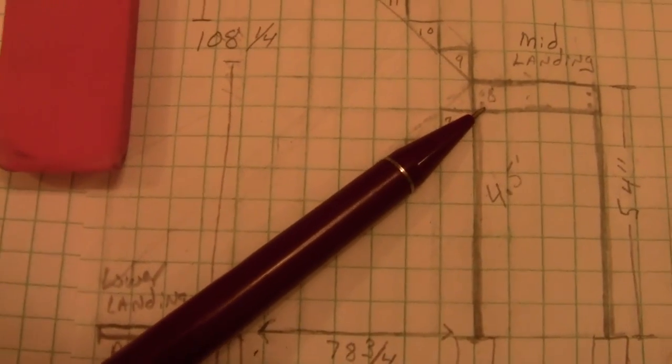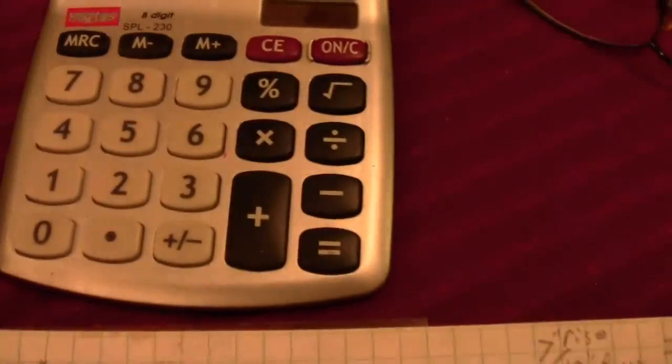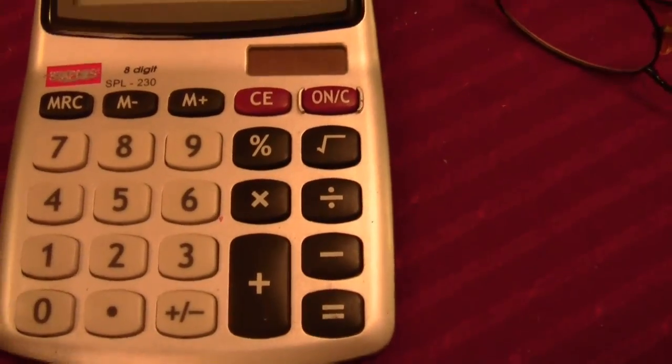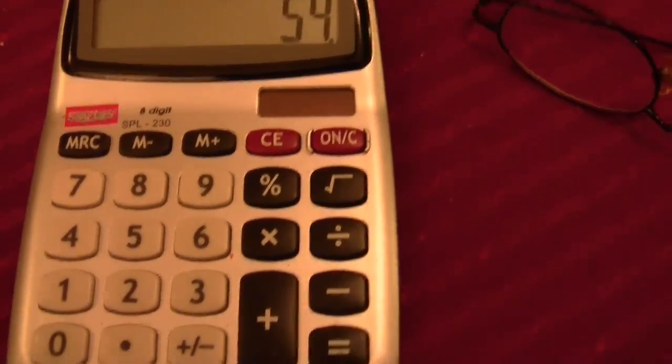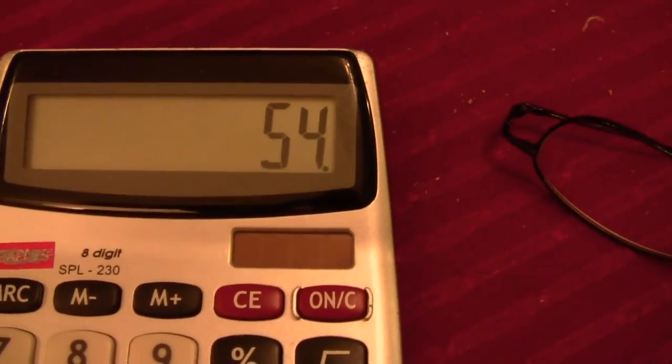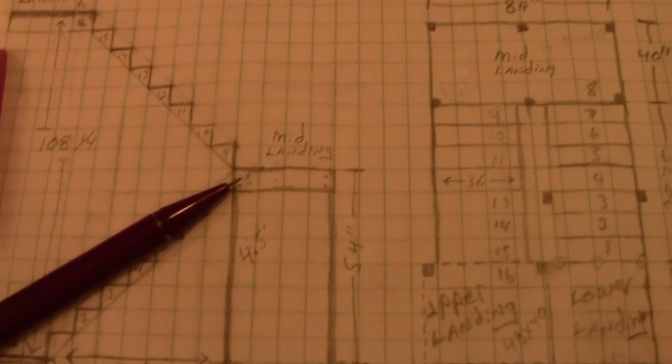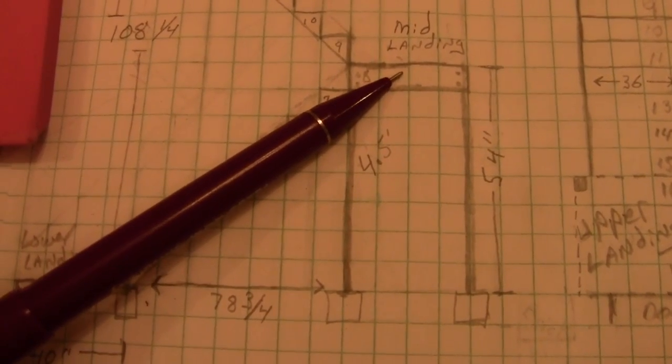And if you multiply, let's see, 8 times 6.75, you'll see that that is 54 inches. So now I know exactly how high my mid-level landing has to be.